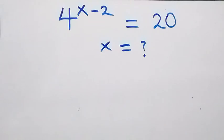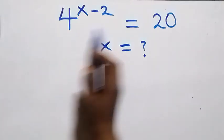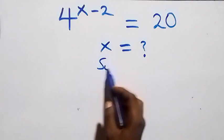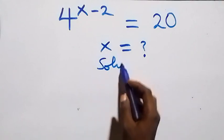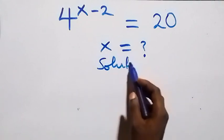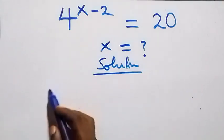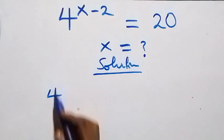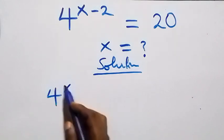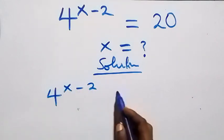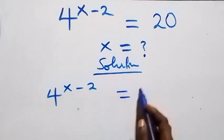Hello, you're welcome. We're going to solve this nice exponential equation. What we have here is 4 raised to the power x minus 2, equals 20.